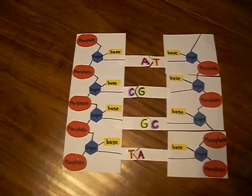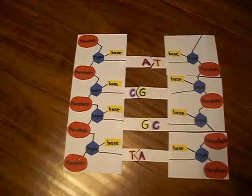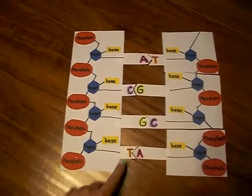Pyrimidine is another type of nitrogenous base and it consists of cytosine and thymine.